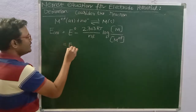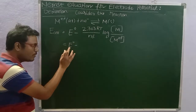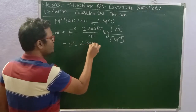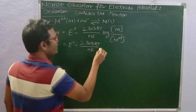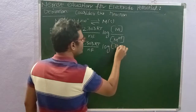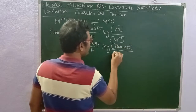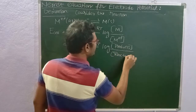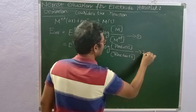We are going to convert this to the form: E = E naught minus 2.303 RT divided by Nf, times log of concentration of products divided by concentration of reactants. E naught is the standard electrode potential. This is expression number 2.